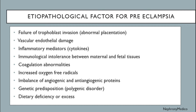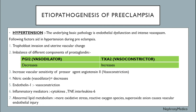Increased oxygen free radicals, imbalance of angiogenic and anti-angiogenic proteins, genetic predisposition, and dietary deficiency or excess of protein. Etiopathogenesis of preeclampsia: The underlying basic pathology is endothelial dysfunction and intense vasospasm. Contributing factors include trophoblast invasion and uterine vascular changes, imbalance of prostaglandins where PGI2 decreases and TXA2 increases, increased vascular sensitivity to angiotensin II, decreased nitric oxide and endothelin-1 vasoconstriction, inflammatory mediators, and abnormal lipid metabolism.